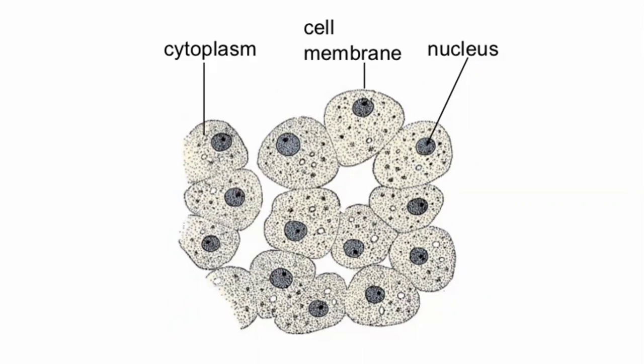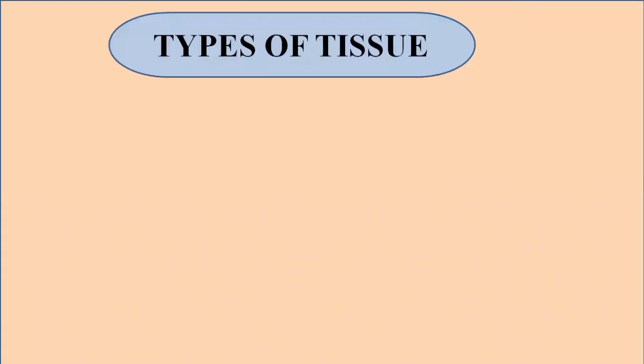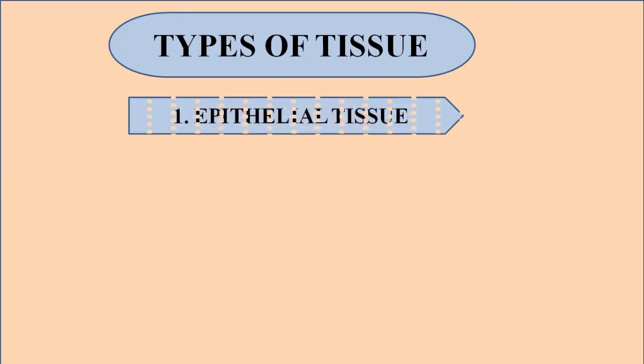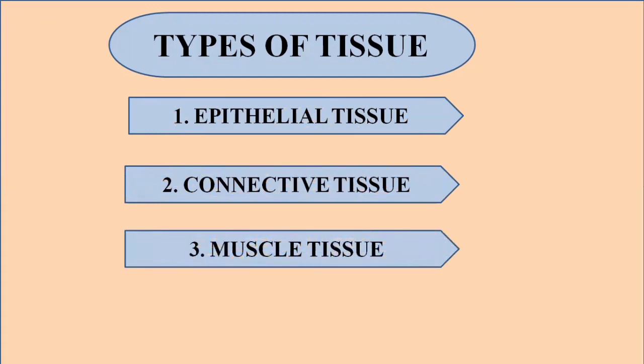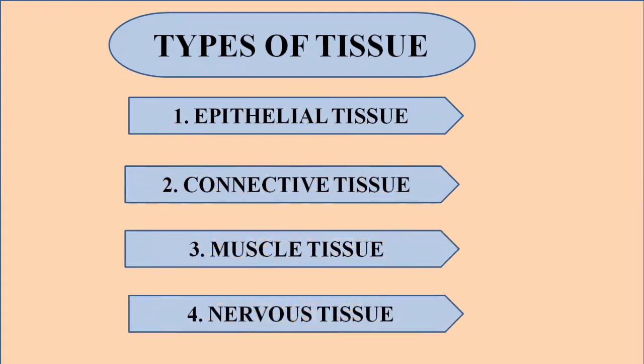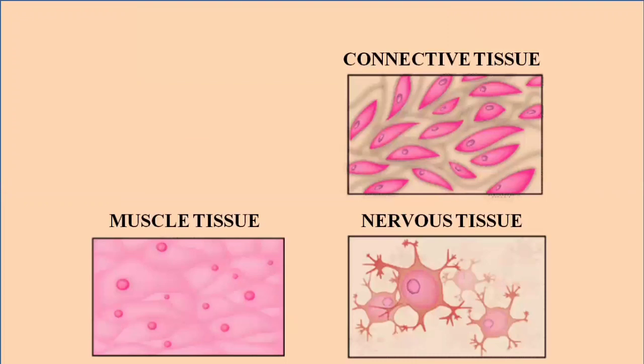The human body is made up of different types of tissues. Tissues are classified according to their size, shape, and different functions. There are four different types of tissues in the human body: epithelial tissue, connective tissue, muscle tissue, and nervous tissue. These tissues are classified on the basis of their location, function, shape, and the cells they contain.